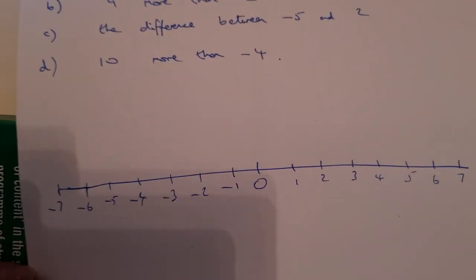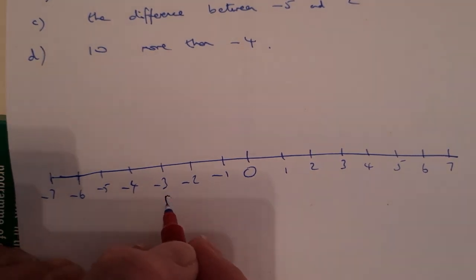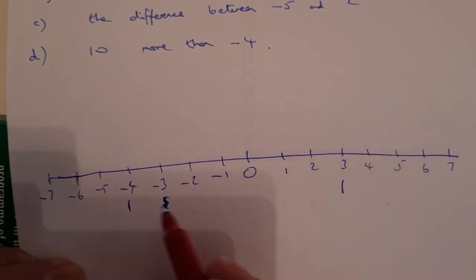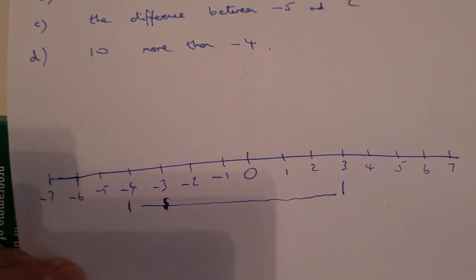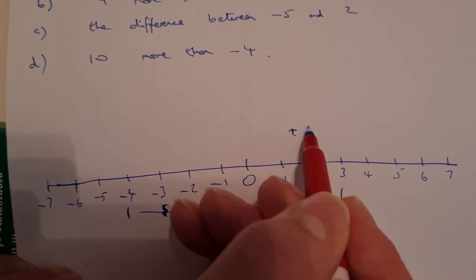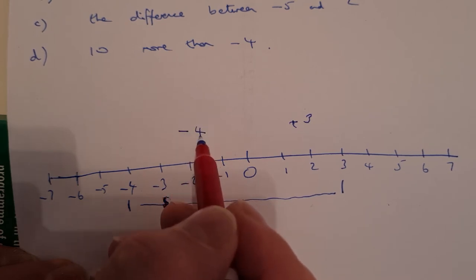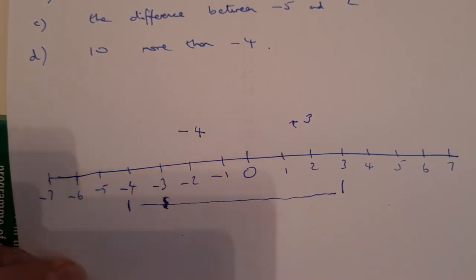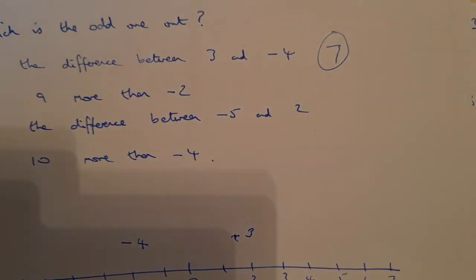So I have my number line here and the first one is the difference between 3 and minus 4. Well minus 4 is there and 3 is there so I'm looking at this distance here. What is the difference between these two numbers? Well I've got 3 above 0 and I've got 4 below 0, and so the 3 and the 4 together gives me 7. So the answer to that one is 7.